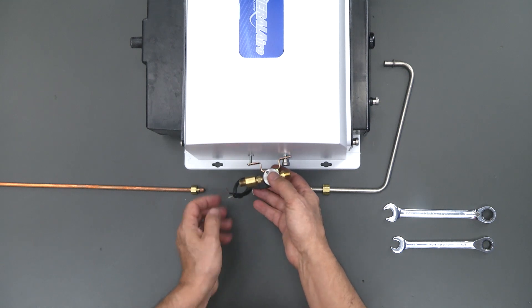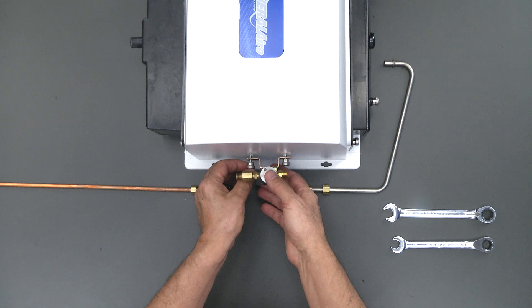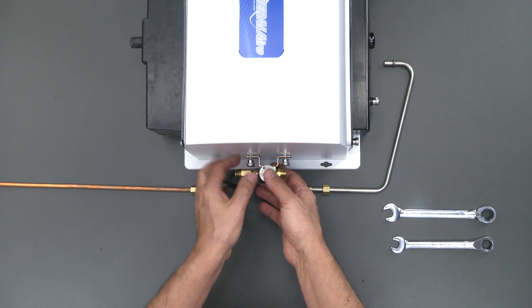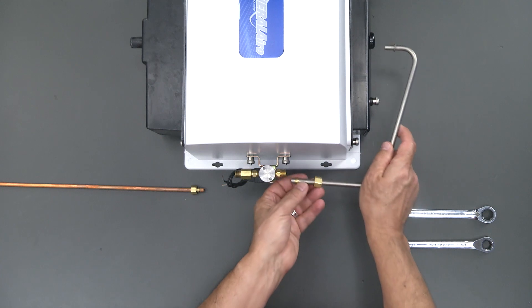So we're going to mount this thing first. We're going to leave it loose so that we can move it back and forth until our alignment's done. We can move this thing back and forth, so let's connect the water lines.